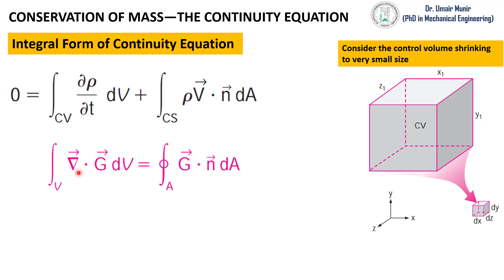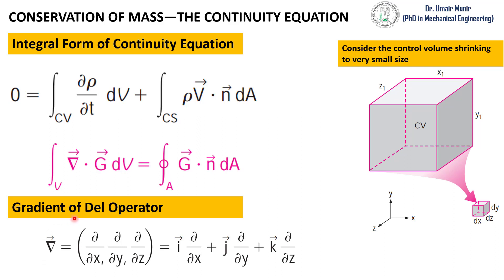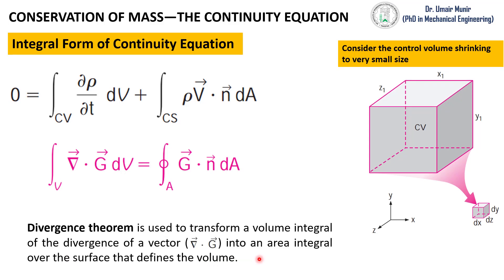The del operator represents the divergence of this property — that is, how the property is changing in x, y, or z. Divergence theorem is used to transform a volume integral of a divergence of a vector into an area integral over the surface that defines the volume. This control volume is defined by 6 faces, meaning 6 surfaces are defining this control volume.